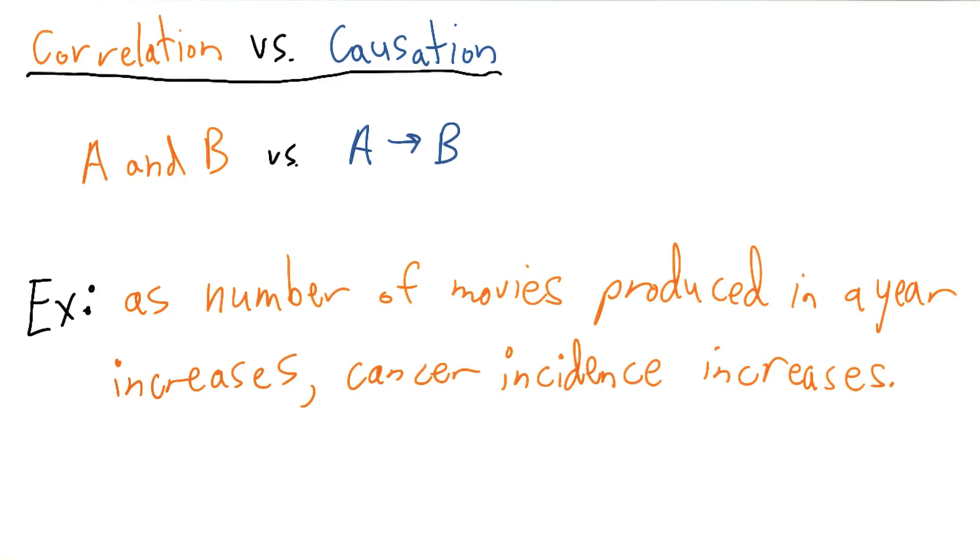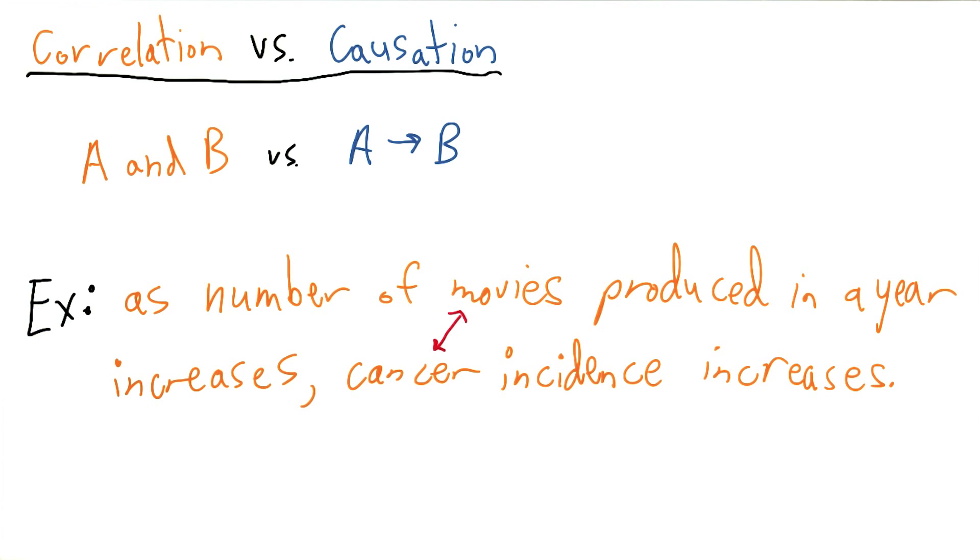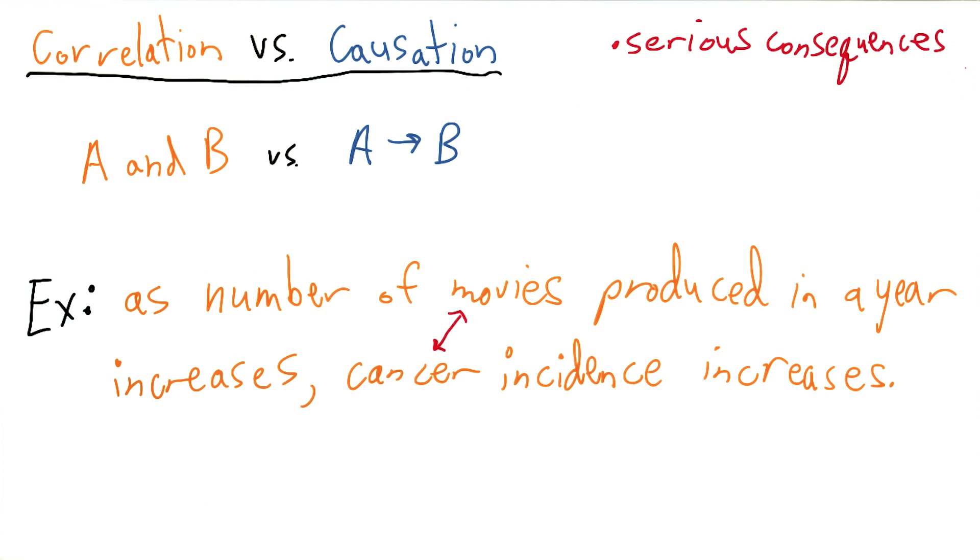This could perhaps lead to some serious actions being taken erroneously. If the relation between movies produced and cancer is completely spurious and the true cause of the cancer incidence increase is due to some completely separate event, if the results are presented on potentially wrong media, let's say an academic paper rather than simply on a personal blog or maybe in an article, some serious consequences might be taken based off of the spurious correlation.